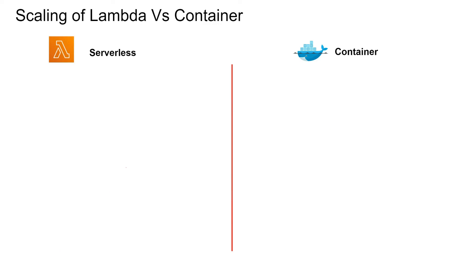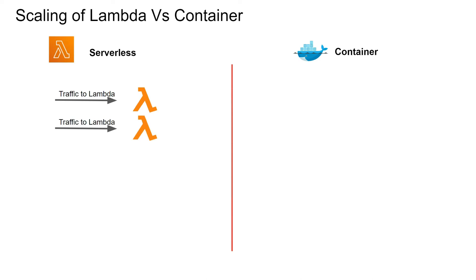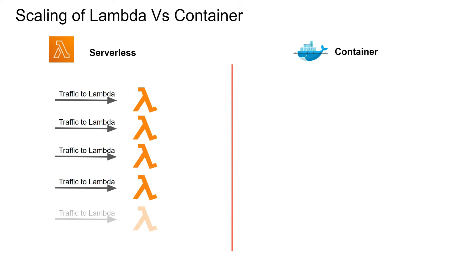Let's take a look at scaling of Lambda versus container. For Lambda, it is pretty straightforward — as traffic increases to the Lambda, it automatically scales, spinning up more Lambdas as traffic keeps increasing. And you pay for what you use.